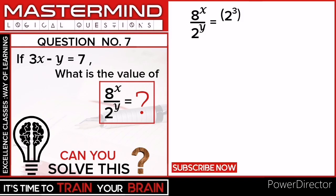So we get 2 cube raised to x upon 2 raised to y. It is equal to 2 raised to 3x upon 2 raised to y.